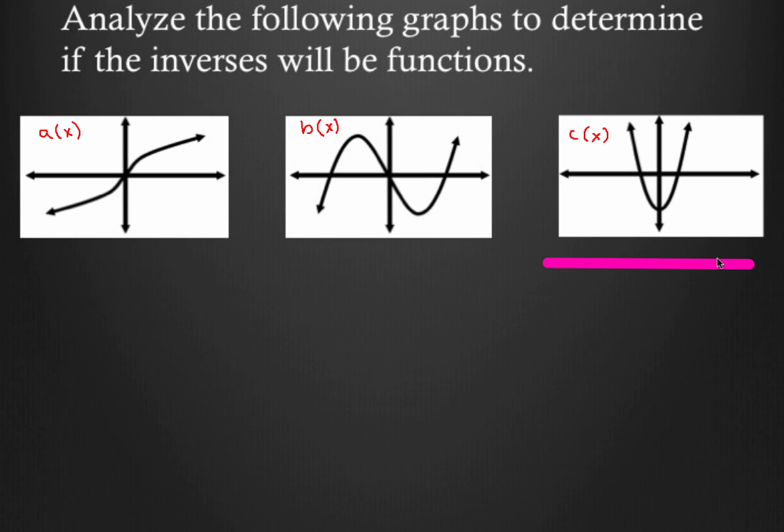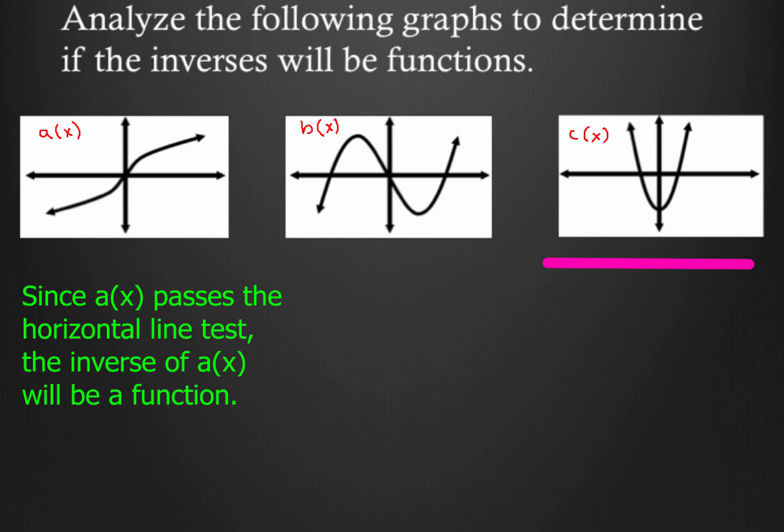So how do we justify this? What can we say so that our teacher is happy? And if your teacher is happy, that probably means you're going to be happy because this is pretty straightforward stuff. So here's all you have to do to justify your reasoning. We'd write the following sentence. Since a of x passes the horizontal line test, the inverse of a of x will be a function.